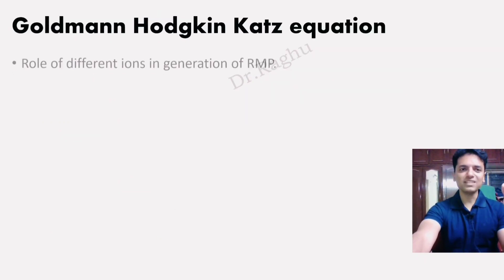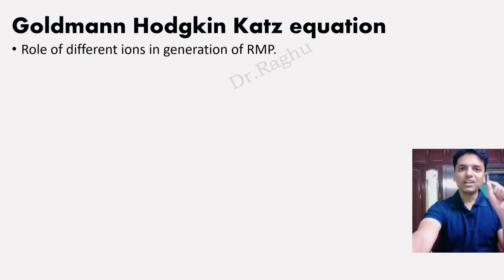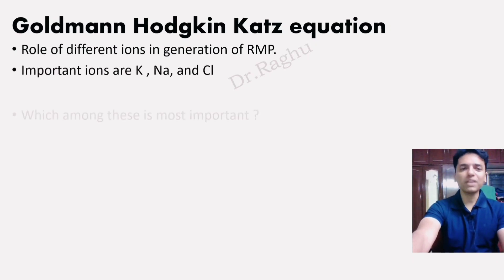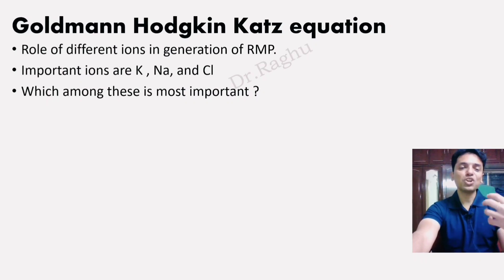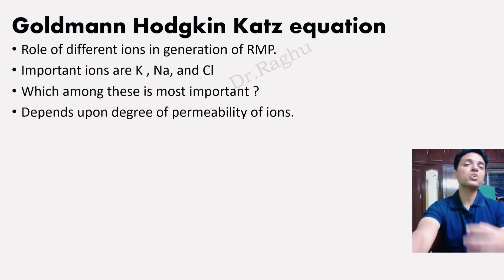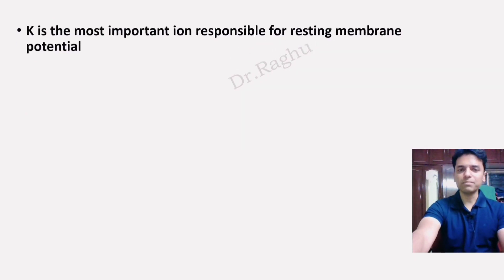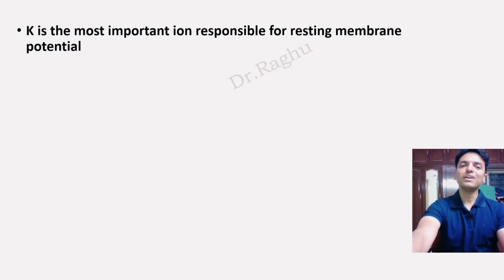The Goldman-Hodgkin-Katz equation tells us the role of different ions in the generation of the resting membrane potential. While the Nernst equation gives the equilibrium potential for a single ion, the Goldman-Hodgkin-Katz equation considers multiple ions — potassium, sodium, chloride — and determines which contributes most to the resting membrane potential based on their relative permeabilities. Since potassium is the most permeable ion, potassium is the most important ion responsible for generating the resting membrane potential.